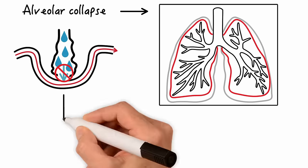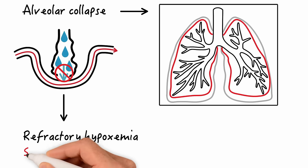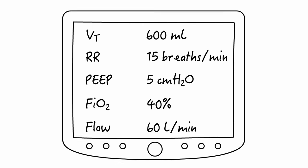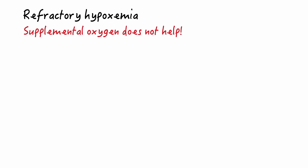Collapsed alveoli may also result in refractory hypoxemia. Refractory hypoxemia is hypoxemia that does not correct with the administration of supplemental oxygen. You can try to administer high levels of FiO2, but because the alveolus is collapsed and compromised, oxygen concentration alone will not correct the hypoxemia.